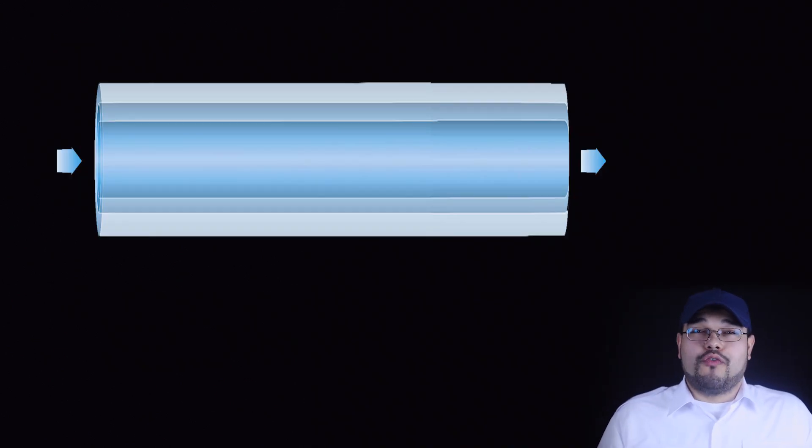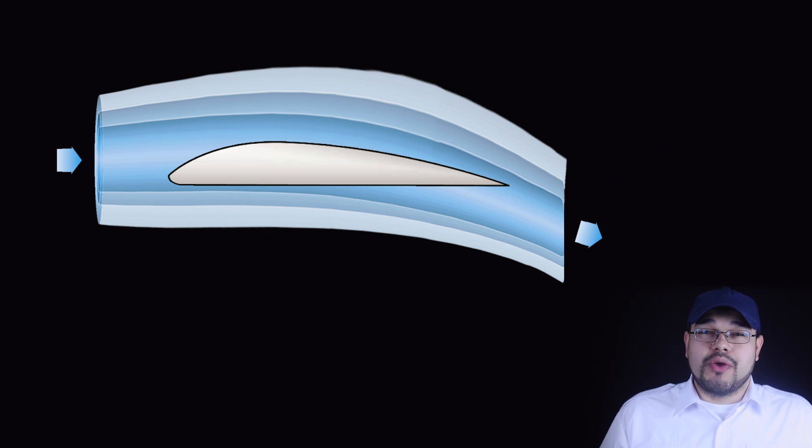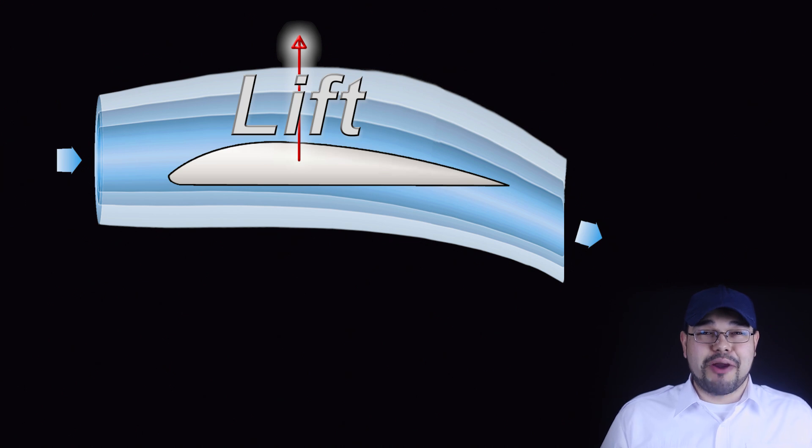But anyway to repeat myself: air starts out stationary, Newton's first law. Due to the air being deflected downward into downwash by the wing, Newton's second law, there's an equal and opposite reaction, Newton's third law. This equal and opposite reaction is the upward force on the wing known as lift which holds the airplane in the air. And there you have why an airplane flies according to Newton's laws of motion.